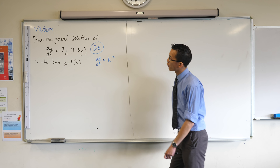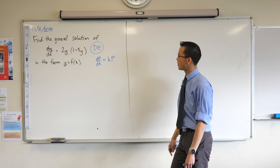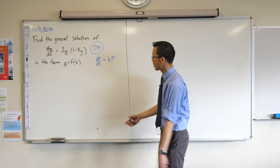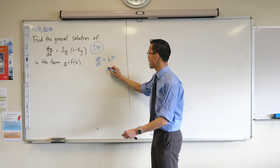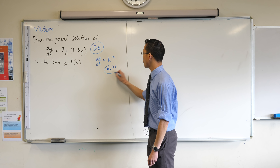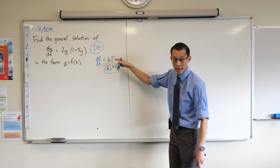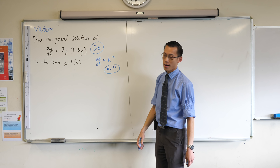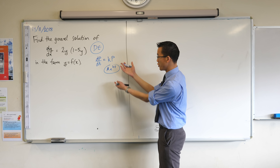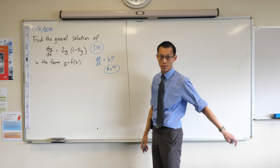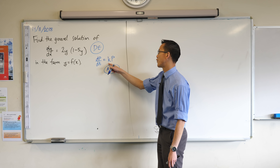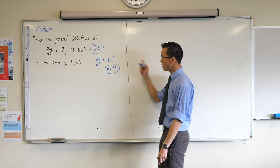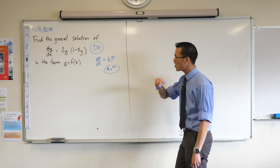That's something we got from two units — the exponential function, like ae to the kt. If you put that in there and differentiate it with respect to time, then you will get back just a constant coefficient out the front of your original function. That's in two unit.